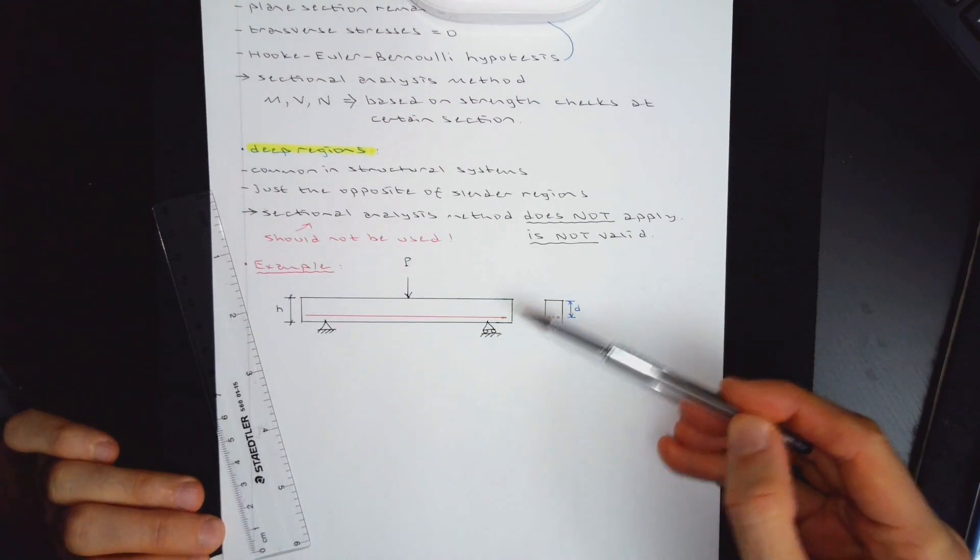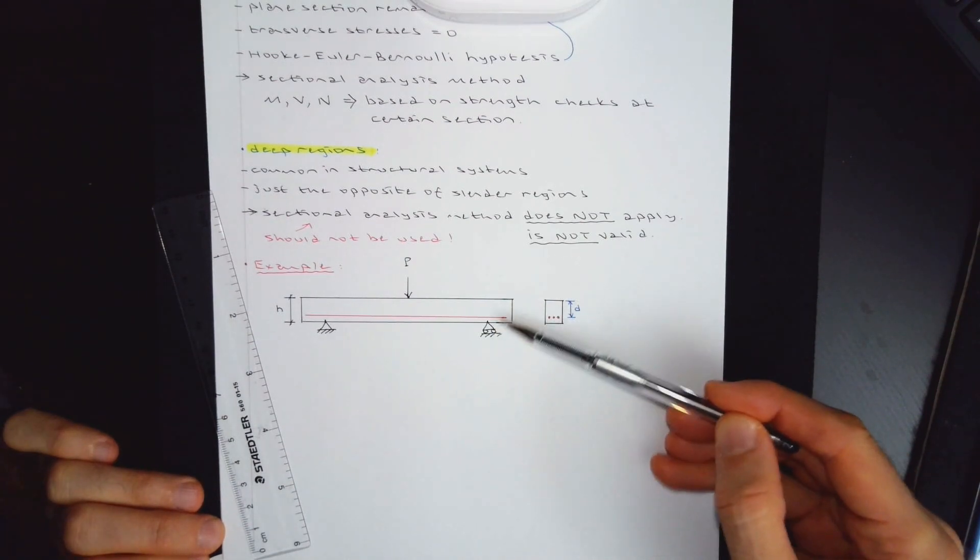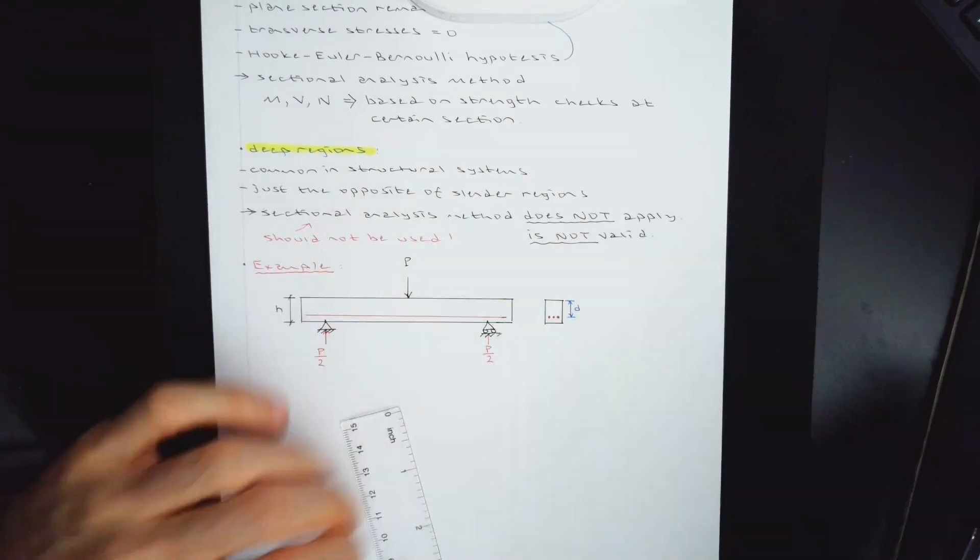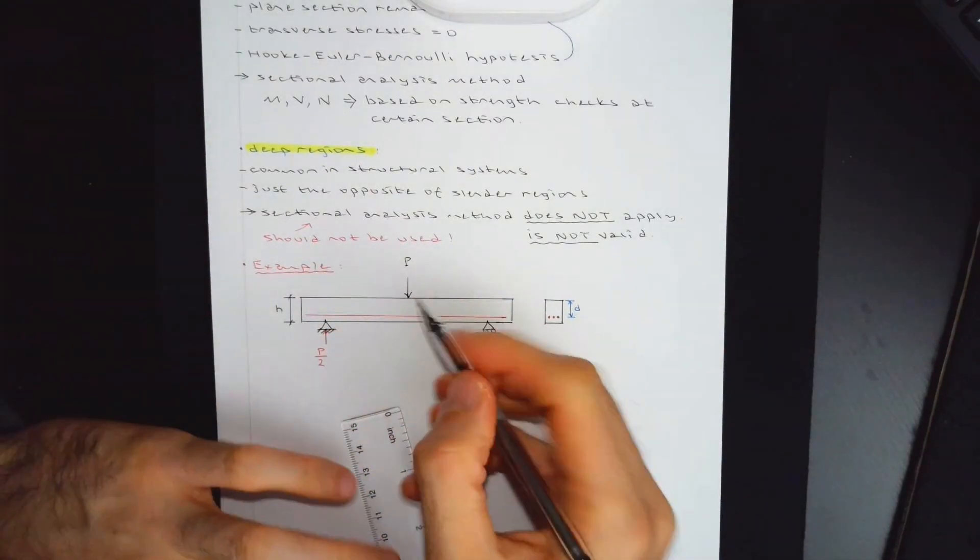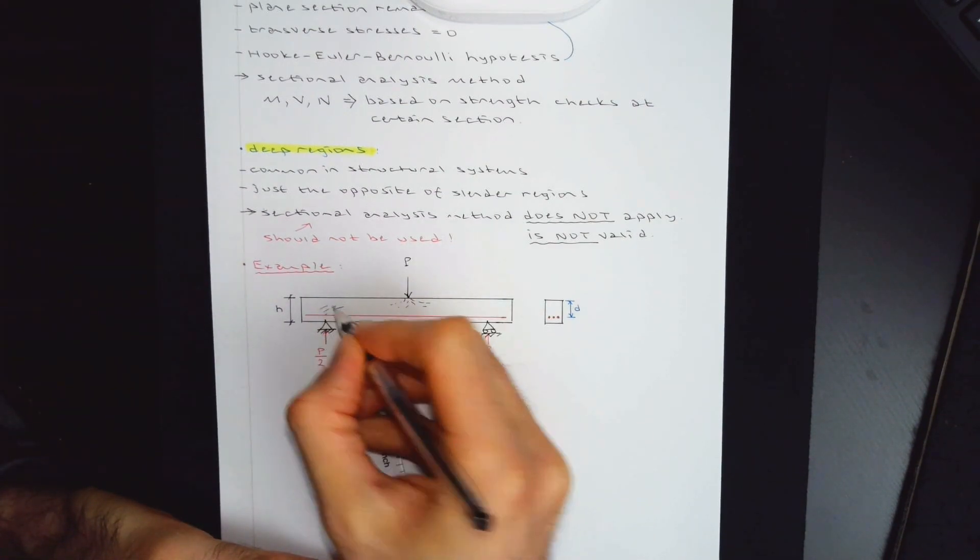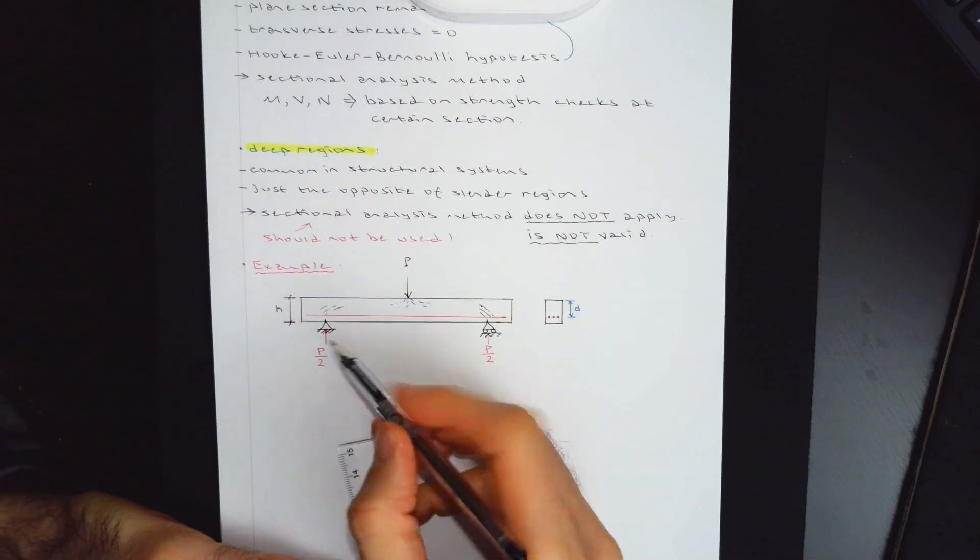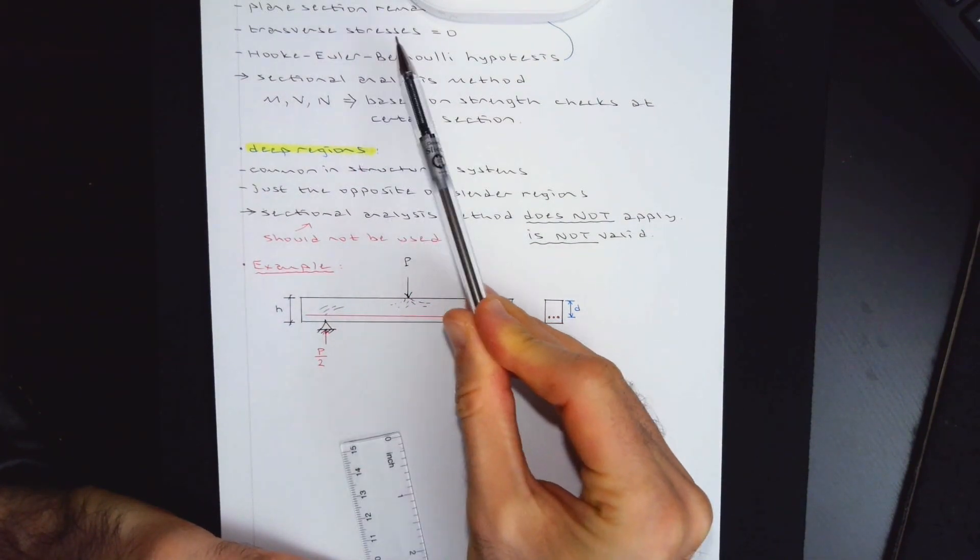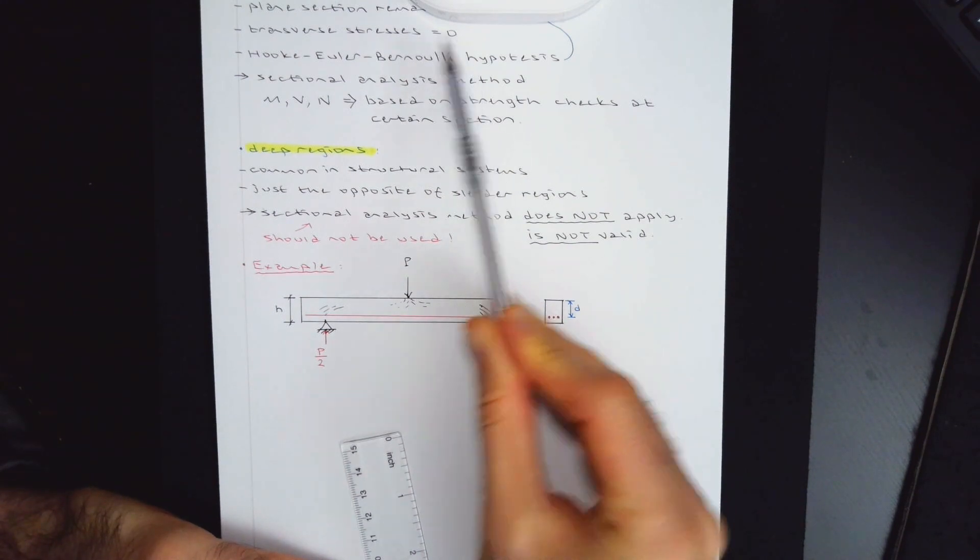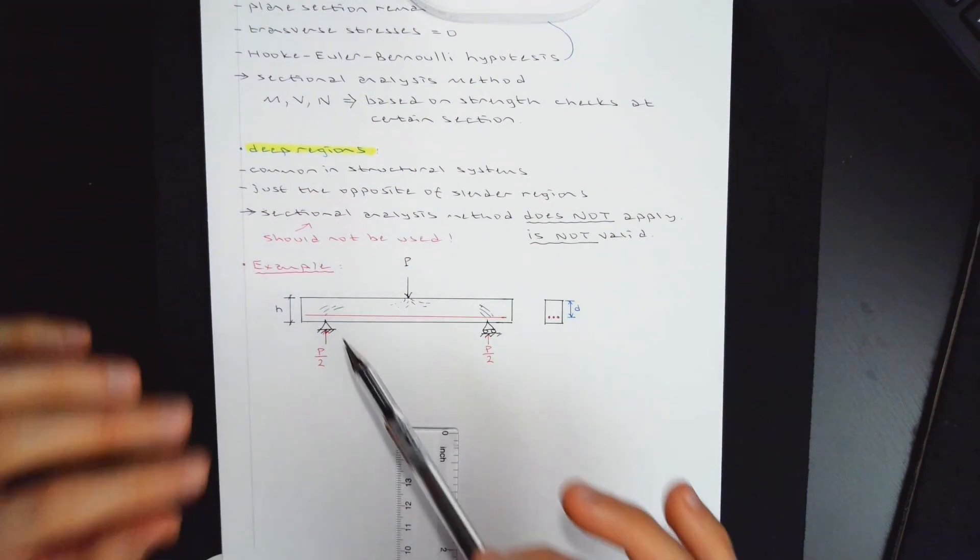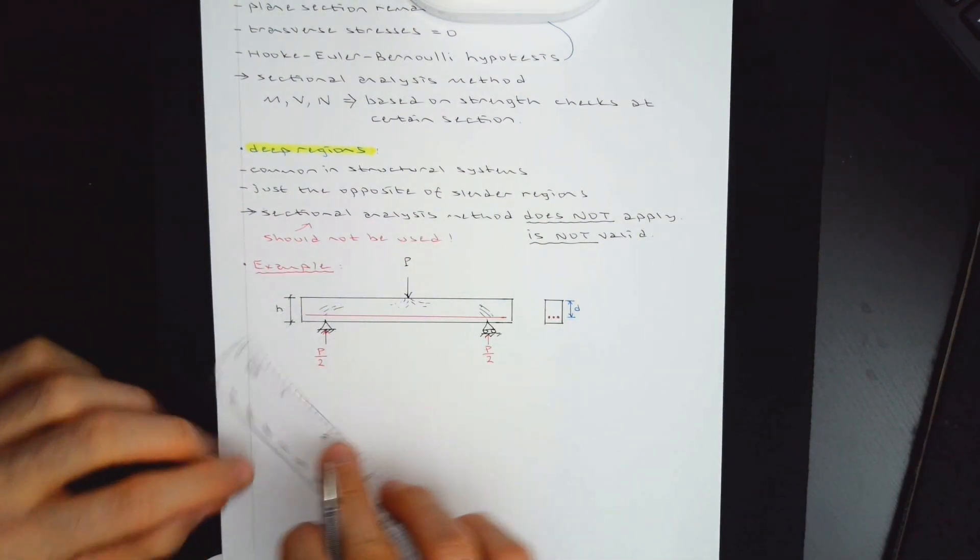You would think that a deep member should look like a deep member. Not necessarily. Any member will have a deep region even though the member is slender. So the issue is that these forces will introduce compression into the member.